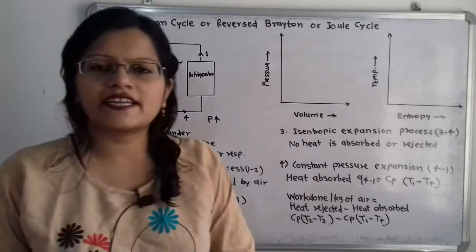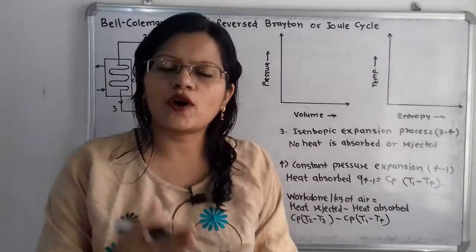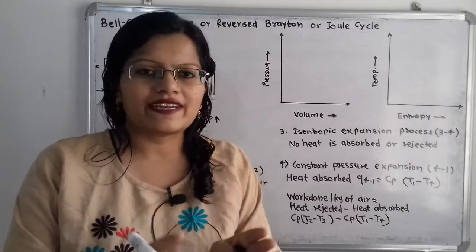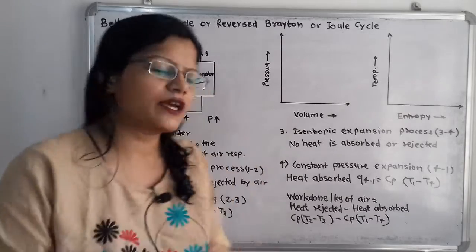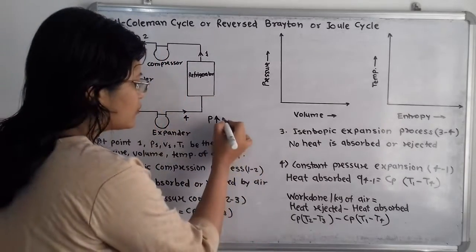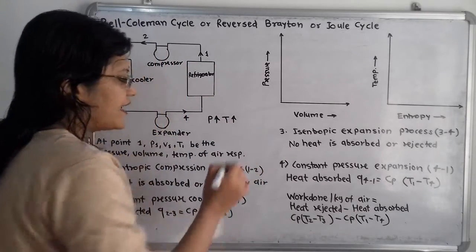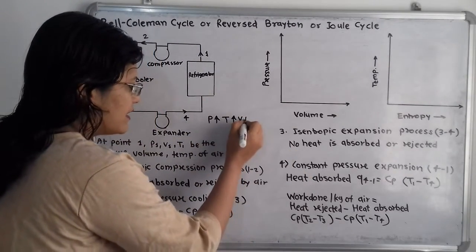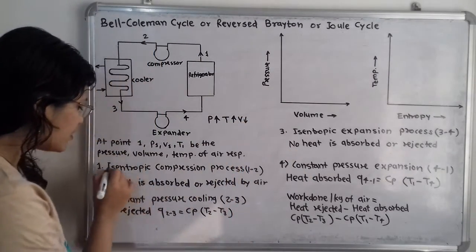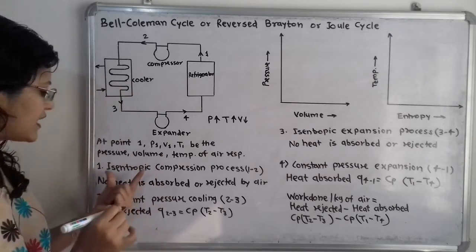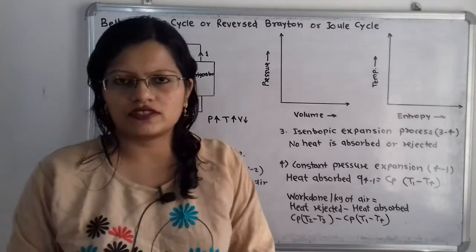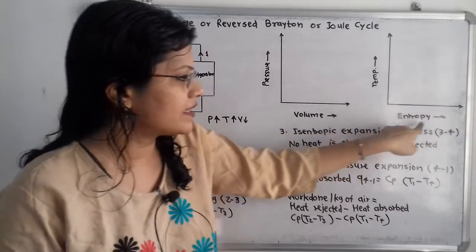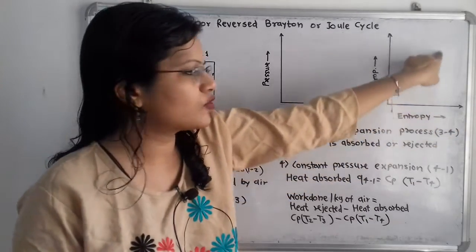As pressure increases, temperature also increases, and at the same time volume decreases. Since this is an isentropic process, entropy remains constant. On the temperature-entropy diagram, the horizontal axis is entropy, so for the isentropic process we draw a straight vertical line.